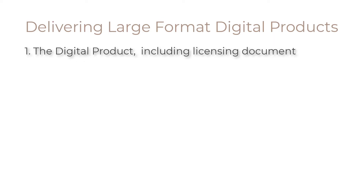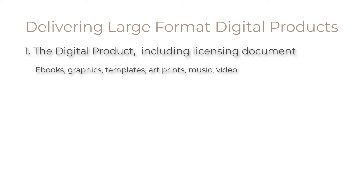In order to do this you're going to need four things. Number one, the digital product itself. Digital products are products that are delivered digitally via download — nothing physical is sent. Your customer purchases the product and downloads it directly from the internet. These are things like graphics, templates, ebooks, printables, art prints, and similar items. Now things like courses are also digital products, but the delivery for those is going to be a lot different than what I'm going to show you here.